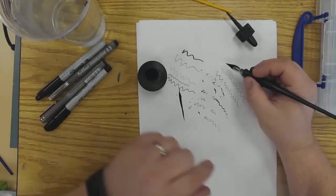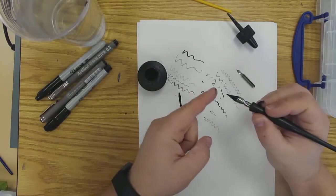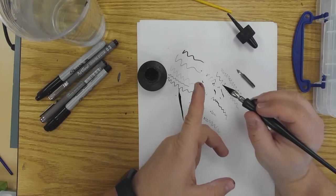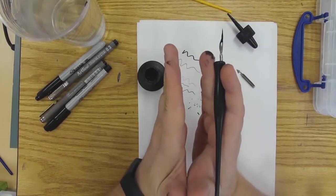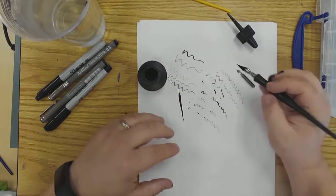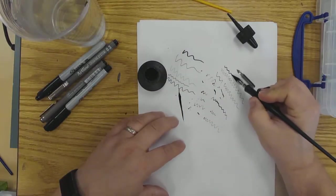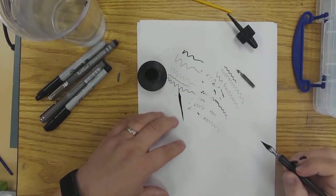But if I put a little bit of pressure on it, you'll notice that the very tip is actually separated. And so it'll spread open and make a thicker line with a little bit of pressure. So if I put some pressure down, you can see I can get a thicker line.